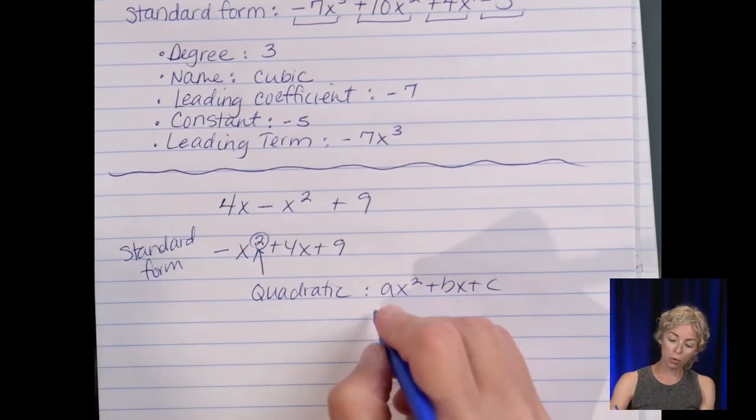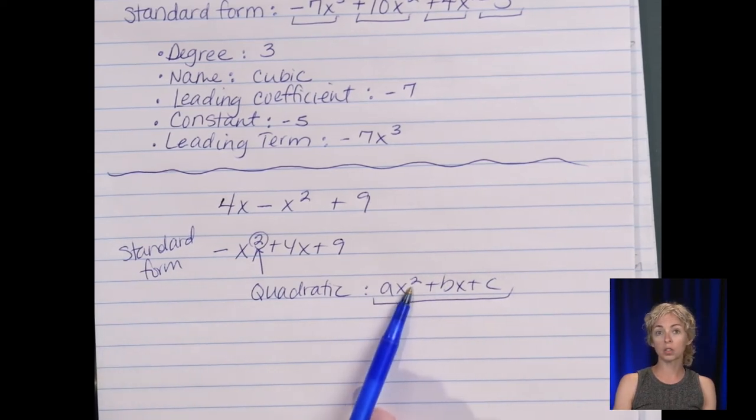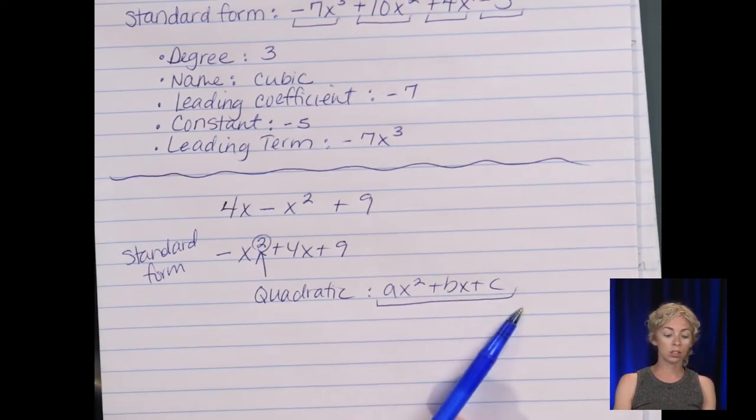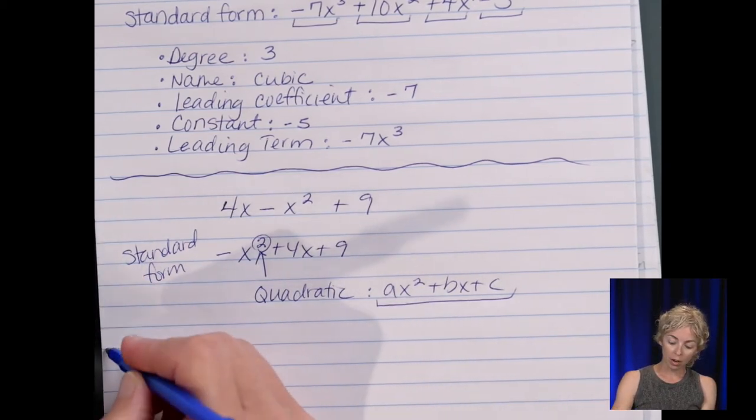Remember your quadratic form or format they want. Remember is the ax squared plus bx plus c. So when they ask you for this format, we just want to put it in standard form. Or it says put the x squared term first, then the x term, and then the constant.